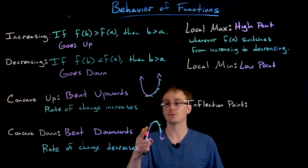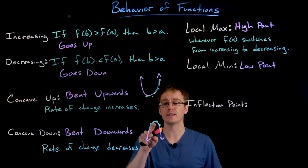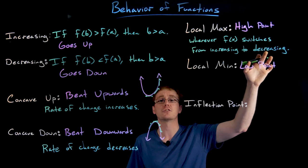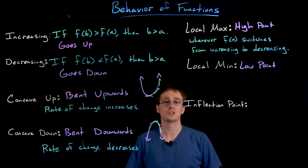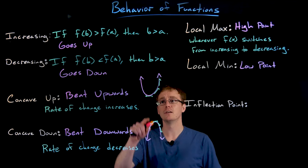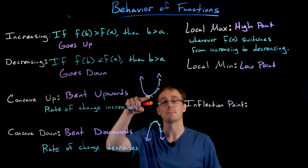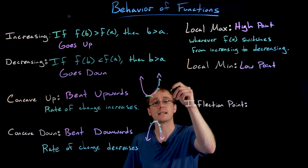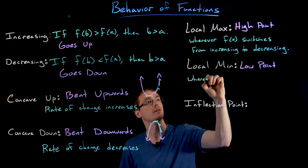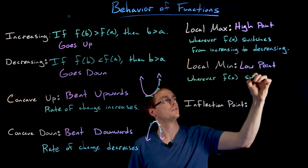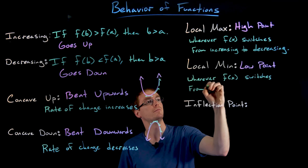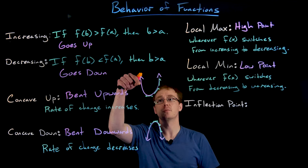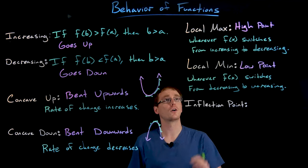On the concave down parabola example, we clearly have a local maximum at the top — we go up to it by increasing, and since it's the highest point we then start decreasing. So the formal definition: a local maximum occurs wherever the function switches from increasing to decreasing. Conversely, a local minimum occurs wherever our function f of x switches from decreasing to increasing — that switch creates a little valley and one of our local minimums.